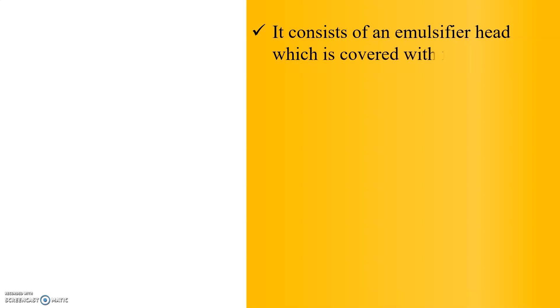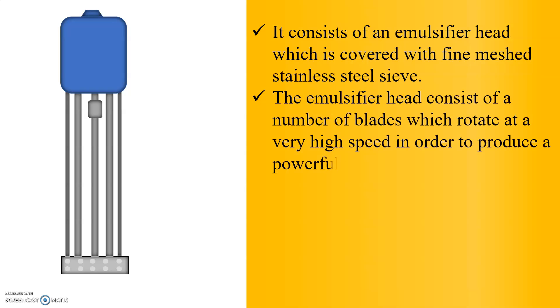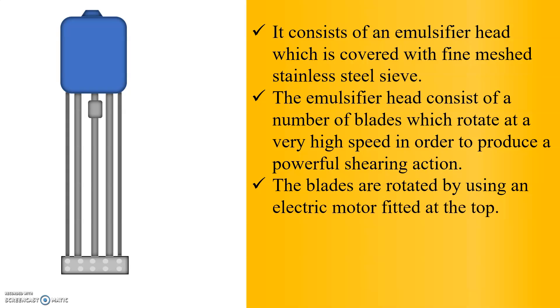Now let us see the construction of Silverson Mixer Homogenizer. It consists of an emulsifier head which is covered with fine meshed stainless steel sieve. Here you can see the diagram of Silverson Mixer Homogenizer. The emulsifier head consists of a number of blades which rotate at a very high speed in order to produce a powerful shearing action. The blades are rotated by using an electric motor which is fitted at the top.